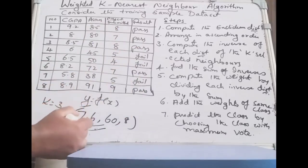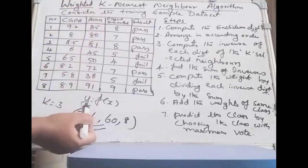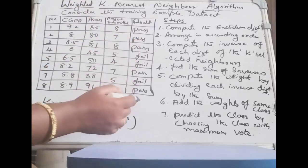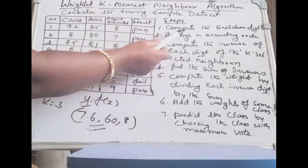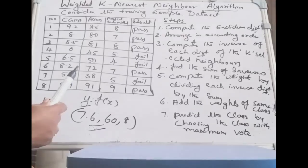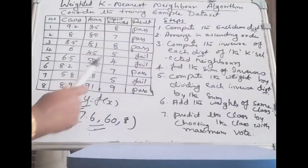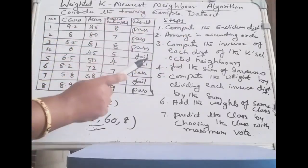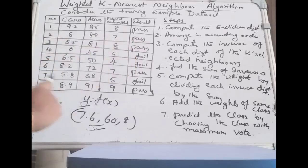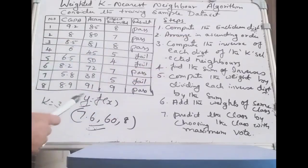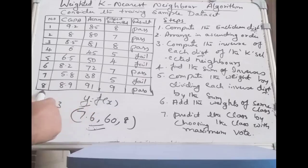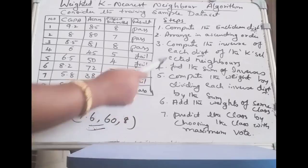The procedure to compute whether the test instance falls under pass or fail begins with step one: compute the Euclidean distance. Like in the previous video, compute the Euclidean distance for all sample instances and arrange them in ascending order. Eight instances are given here, all should be arranged in ascending order.